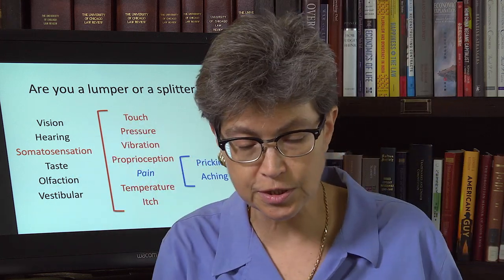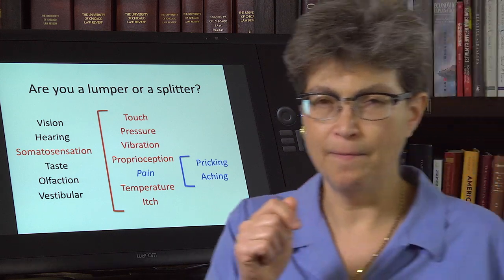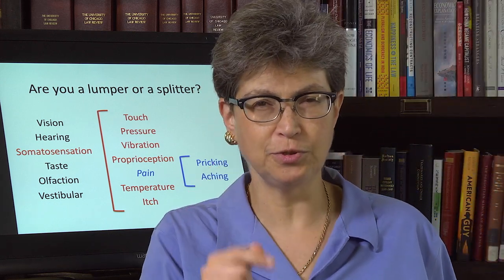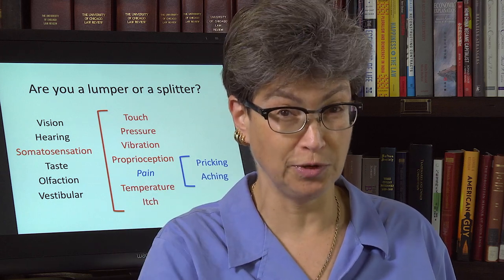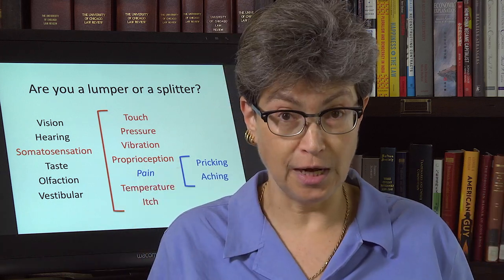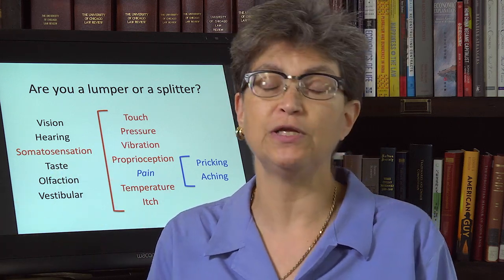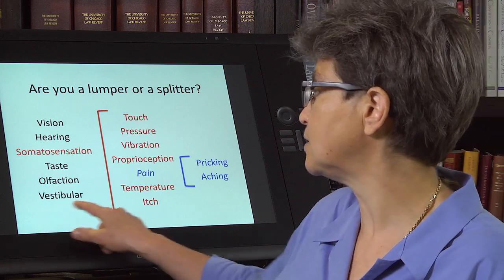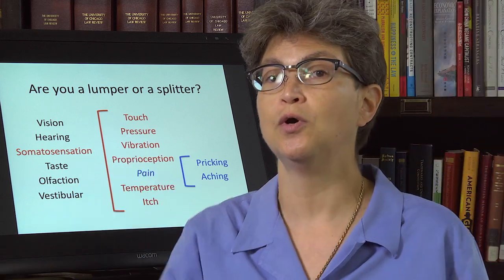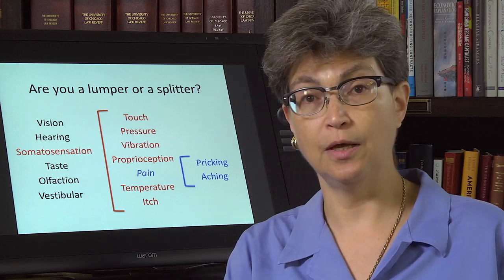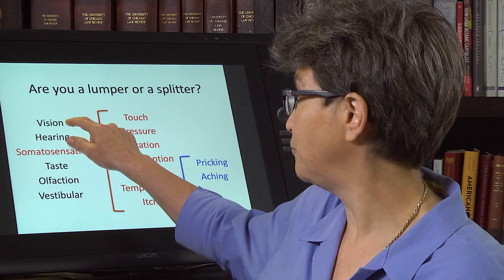In the vestibular system, you don't think about it all the time, but if it goes on the fritz and you have vertigo or disequilibrium, it is very dominating. The misbehavior of this system is extremely clinically relevant, and it also takes us right into the motor systems. Now we're going to start in on vision.